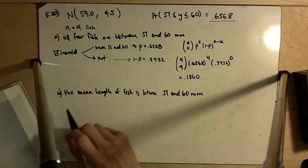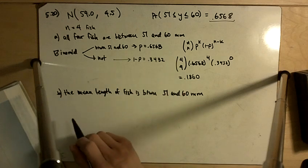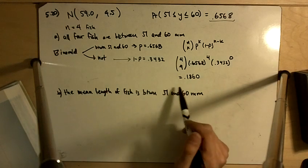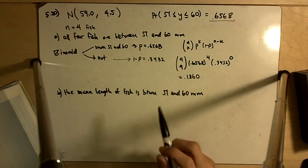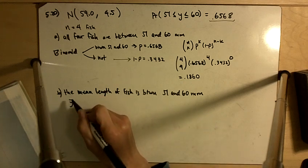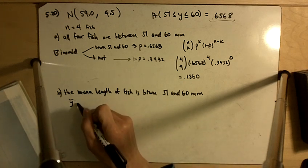Part B asks us, what is the probability that the mean length of fish is between 51 and 60 millimeters? So in this case, it's no longer binomial because now we're looking at the mean length of fish. So the mean length of fish is Y bar, and that's going to have a sampling distribution.